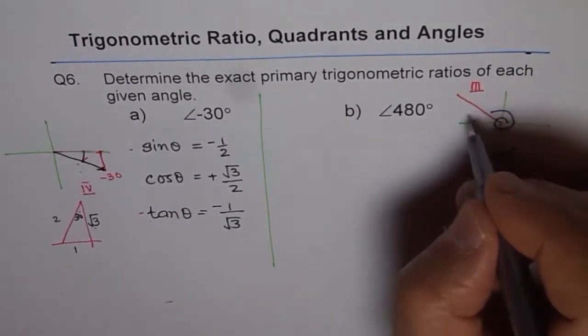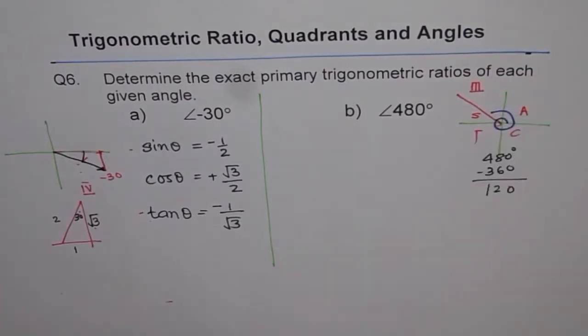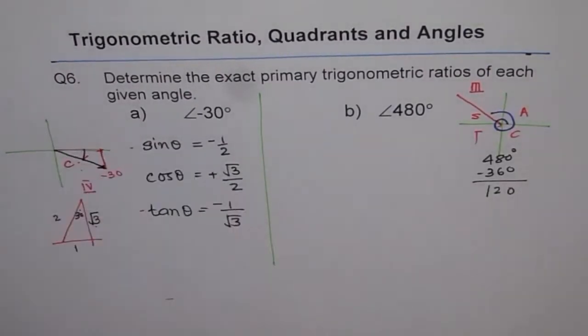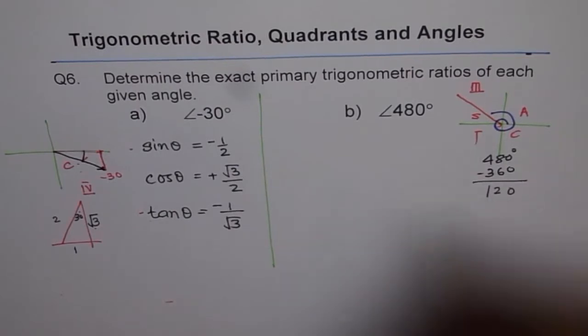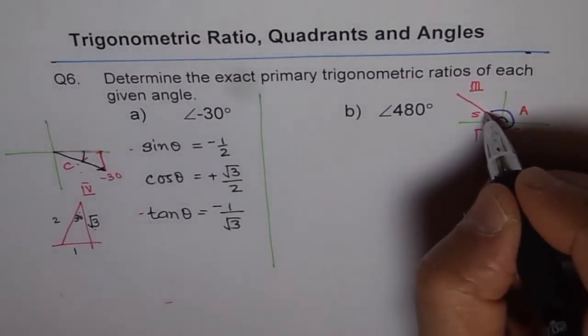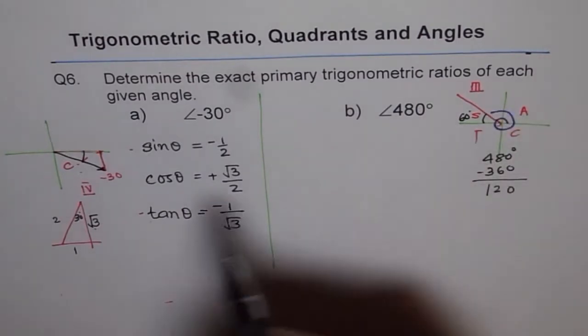In quadrant 2, sine is positive - CAST rule: C, A, S, T. Sine is positive, all others are negative. Now what is the related acute angle? Well, 120 is this, so this left is 60 degrees. So we can again go for 30-60 triangle.